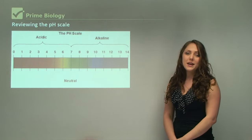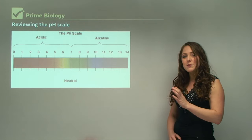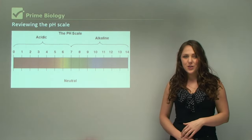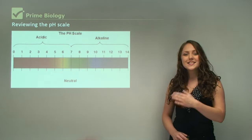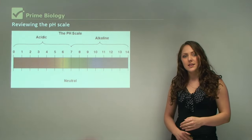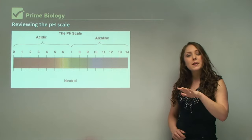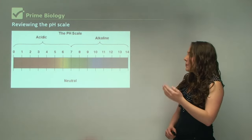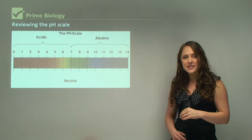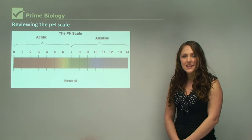When we review the pH scale, and if you want to look at this more in depth you can look at the pH videos, we have pH from 0 to 14. At 0 it's very acidic, at 7 pH is neutral which is safe for the body, and pH 14 is very basic. Another word for basic is alkaline.